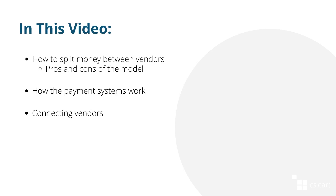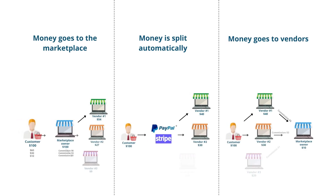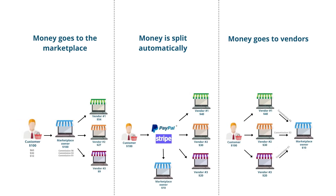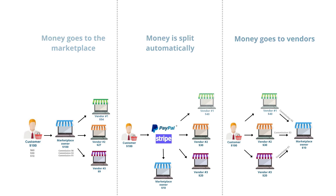Hi everyone! We are continuing our series of videos on what you need to launch a marketplace, and in today's video we will discuss how to split money between vendors. In the previous video called 'Money Flow in Marketplaces', we learned three models of money flow. Now we are going to find out more about the model where the marketplace uses a payment system to split the income between vendors and the marketplace administrator.